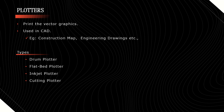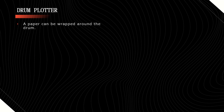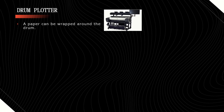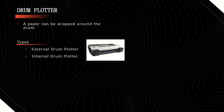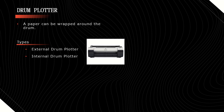Drum plotter: it consists of a drum. Here we can wrap a paper around the drum with pin attachment. Then the drum rotates around the paper and prints the images on it. There are two types: external drum plotter and internal drum plotter. In an external drum plotter, the paper is wrapped around the external surface of the drum. In an internal drum plotter, the paper is wrapped around the internal surface. In both plotters, the drum rotates around the paper to print the image.